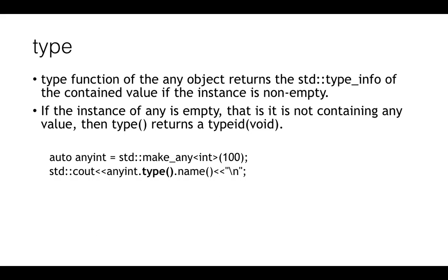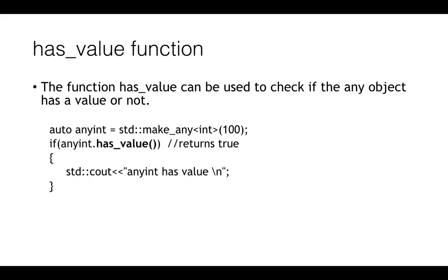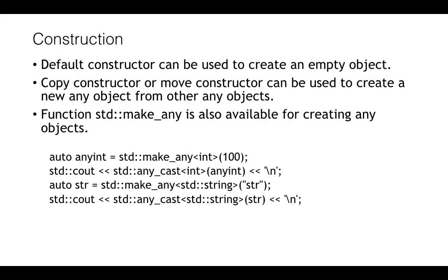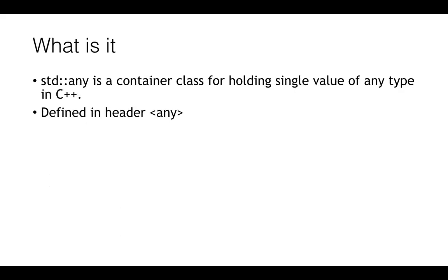These are basically the five key things that I wanted to talk about: the type function, the has_value function, the any_cast operator, the make_any function which can be used for constructing, and the basic purpose of the any class in C++.